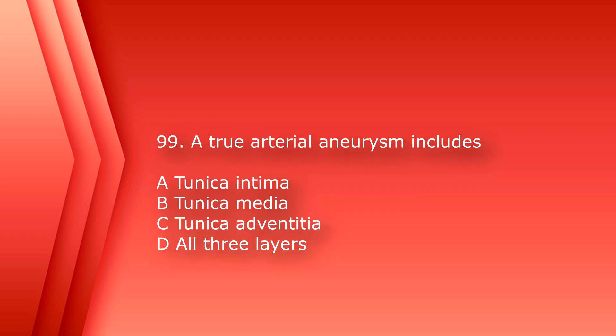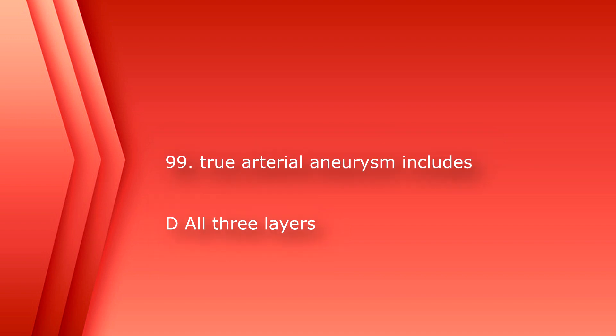Number 99: a true arterial aneurysm includes A. Tunica intima. B. Tunica media. C. Tunica adventitia. Or D. All three layers. The answer is D. All three layers.